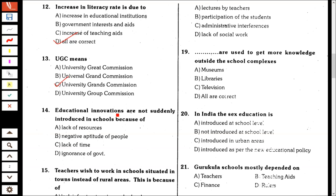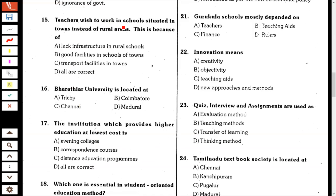Educational innovations are not suddenly introduced in schools because of the negative aptitude of people. Teachers wish to work in schools situated in towns instead of rural areas. This is because of all are correct: lack of infrastructure in rural schools, good facilities in schools of towns, and transport facilities in towns.